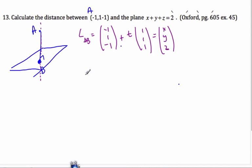So I'm going to plug it into this plane here. So I know it's -1+T, plus 1+T (my Y), and then finally my Z, which will be -1+T. And that has to be 2.